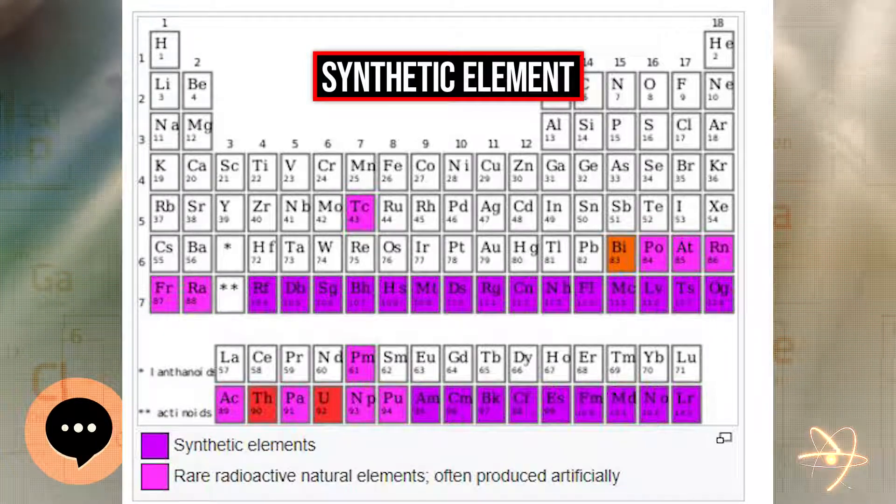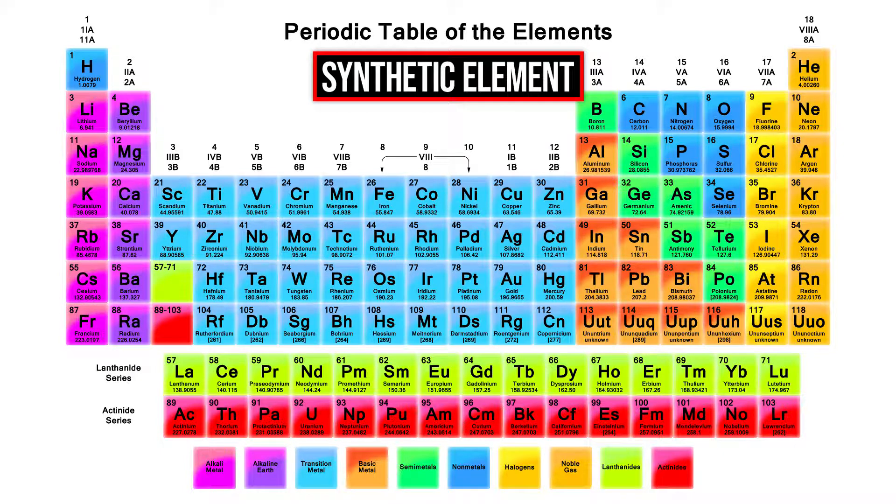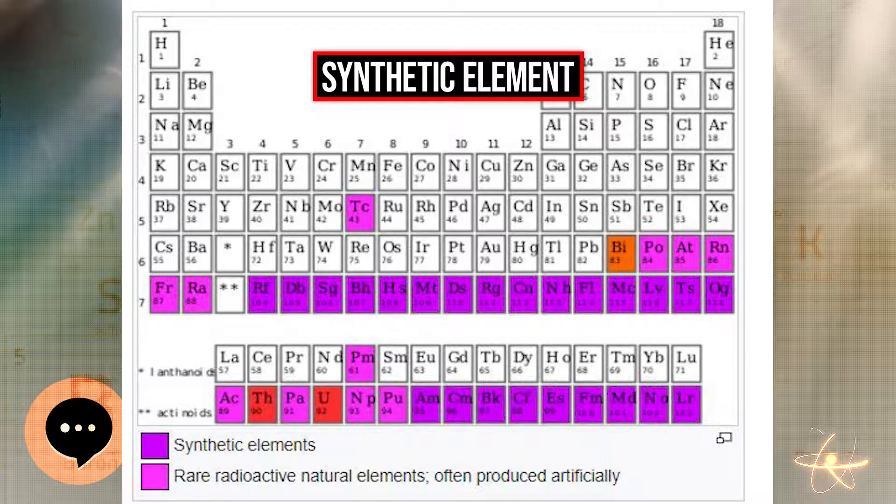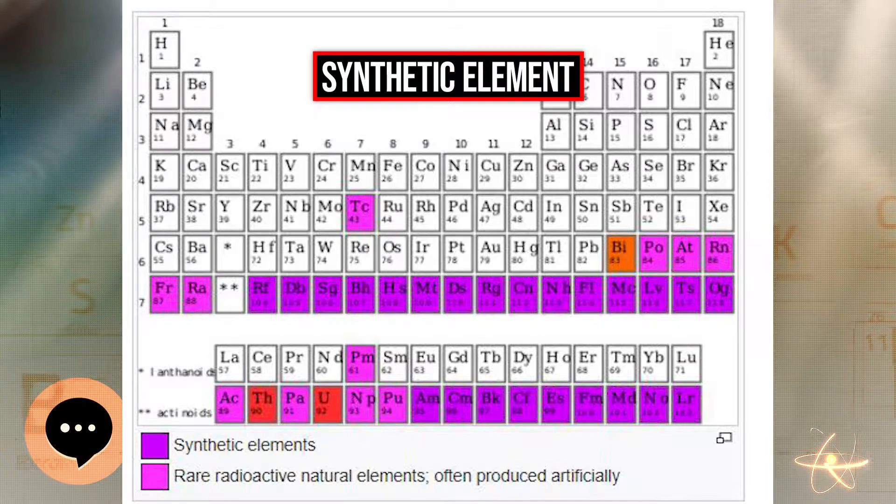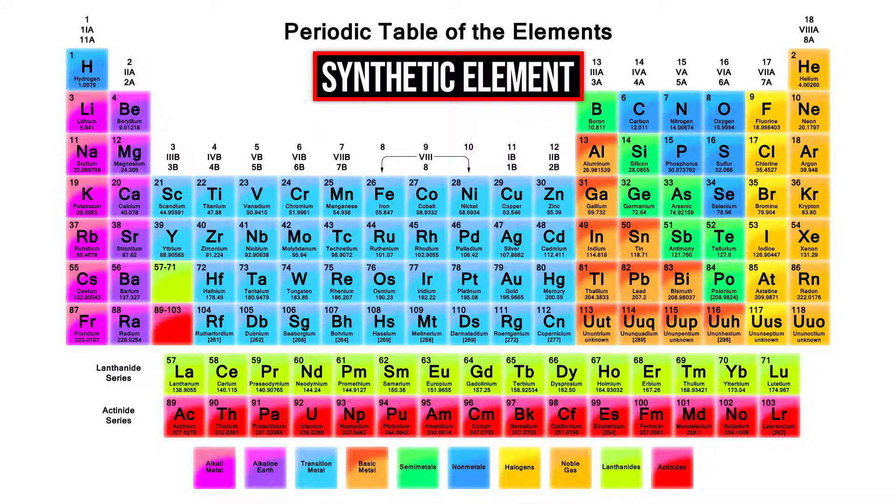In 1997, IUPAC decided to give dubnium its current name, honoring the city of Dubna where the Russian team made their discoveries, since American-chosen names had already been used for many existing synthetic elements, while the name rutherfordium was accepted for element 104.